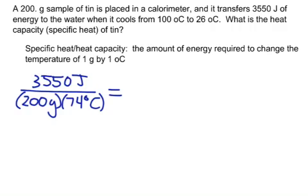And you could just simply say, okay, 3,550 divided by 200, divided by 74, and I got 0.2399 joules for every 1 gram and 1 degree Celsius.